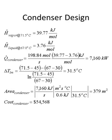The heat transfer coefficient for the condenser is 0.6 kJ/(s·m²·°C). Using the heat duty and the temperature difference, the total area required by the condenser is around 379 square meters, and the cost formula gives a condenser cost of $54,568.